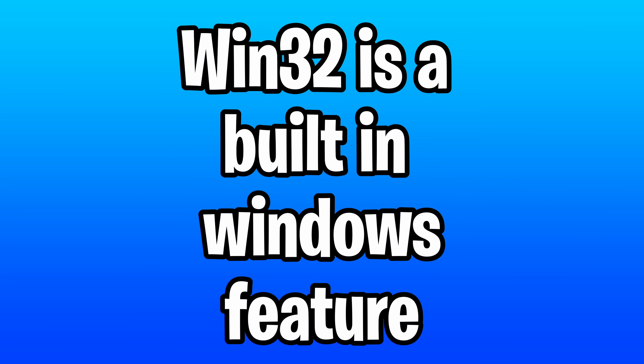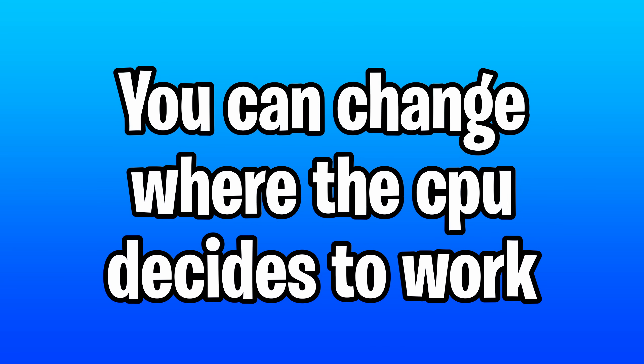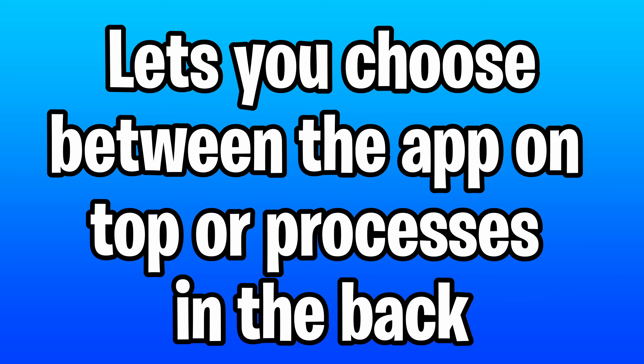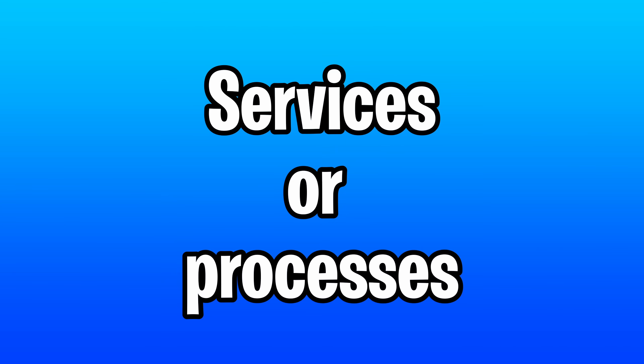Now on to the video. Win32 Priority Separation is a built-in Windows feature that allows the user to optimize processor usage on the foreground and background. In other terms, it helps set the CPU priority to prefer the foreground apps or background use of the processor, like services or processes.